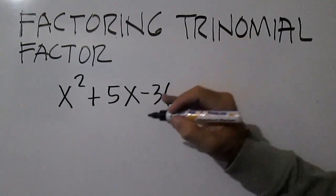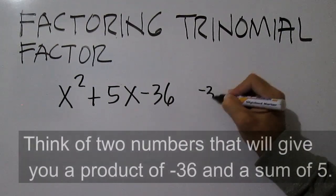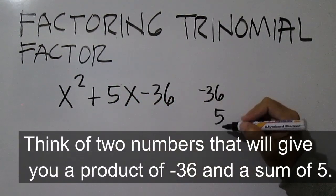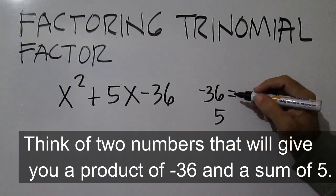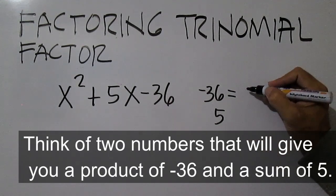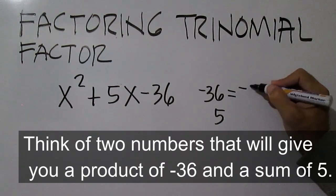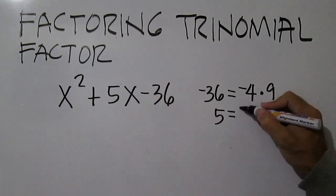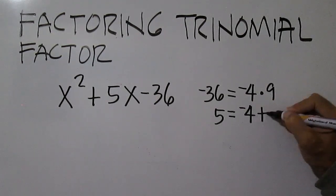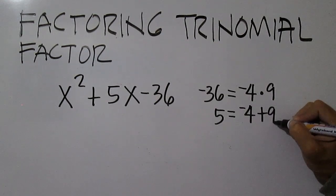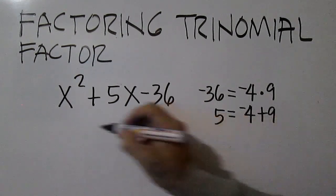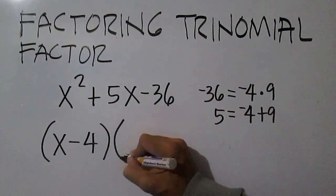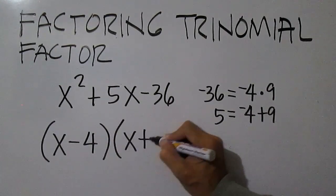Think of two numbers that will give you a product of negative 36 and a sum of 5. Negative 36 equals negative 4 times 9. 5 equals negative 4 plus 9. The factors are x minus 4 and x plus 9.